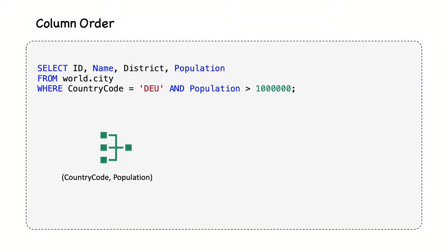Still, how we do this is important. The country code uses an equal reference, whereas the population is a range search. In MySQL, once a column in an index is used for range search or for sorting, no more other columns in the index can be used anymore except for covering index.